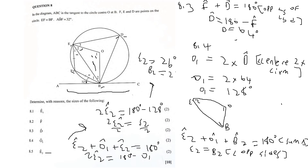B2 is also equal to 26 degrees since opposite angles are equal — though they didn't ask us for B2. That concludes this question. I hope it was very helpful. If something doesn't make sense, please comment in the comment section. Thank you.